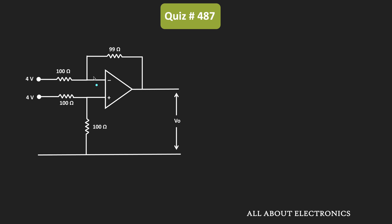Let's say the voltage at this node is equal to Vx. Since the op-amp is operating with negative feedback, it is operating in the linear region, and therefore we can apply the concept of virtual ground. That means V- is equal to V+, which means V- is also equal to Vx. So at the inverting node, the voltage will also be equal to Vx.